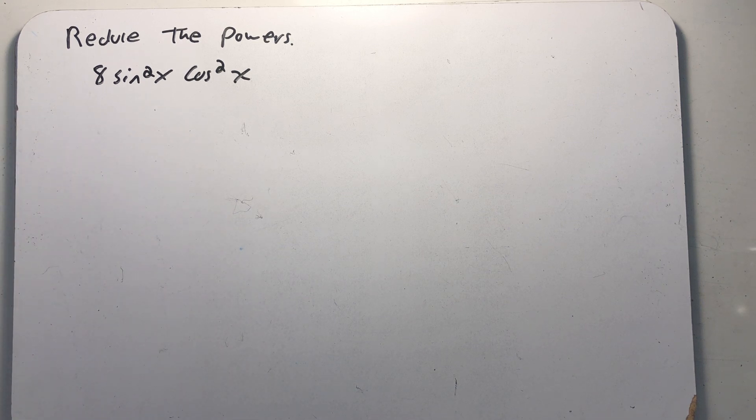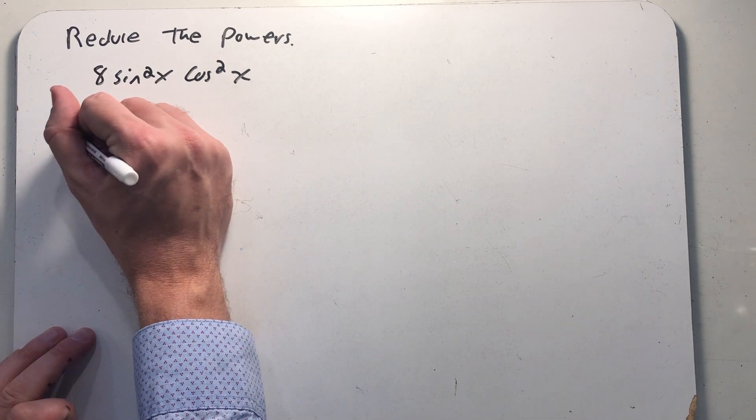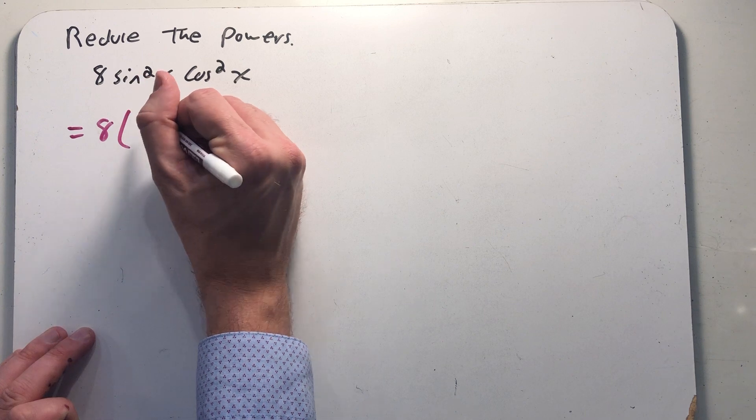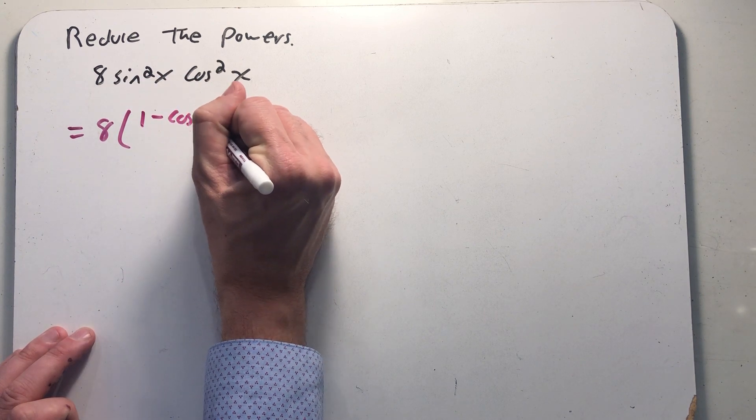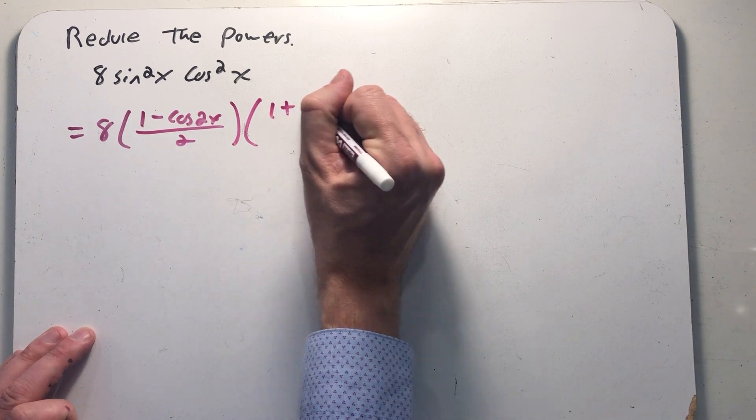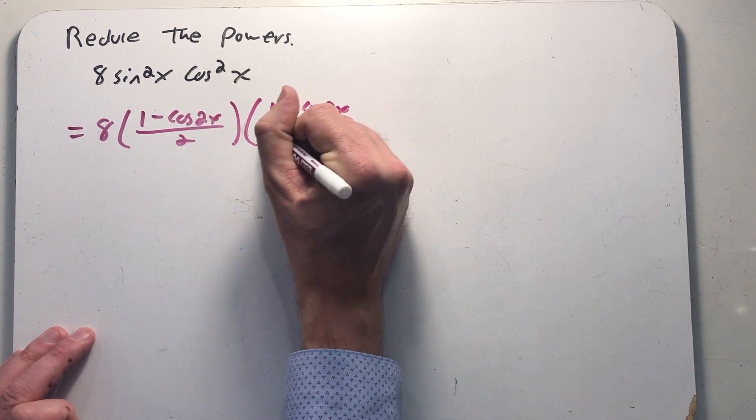I'm going to start by using the power reducing formulas. 8 is just along for the ride for a moment. Sine squared x is the same thing as 1 minus cosine of 2x over 2, and cosine squared x is 1 plus cosine of 2x all over 2.